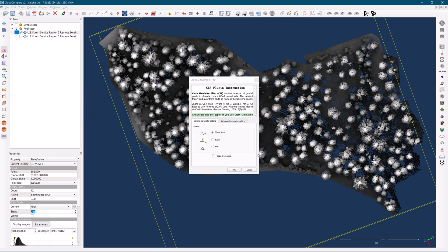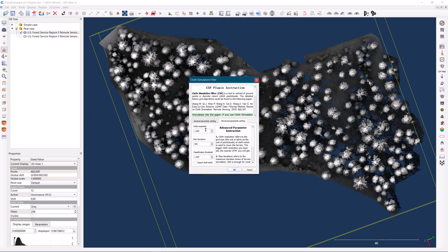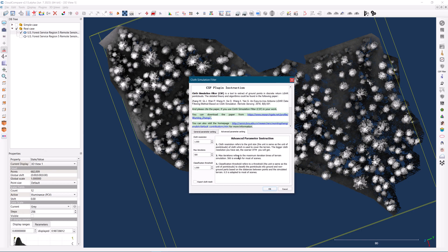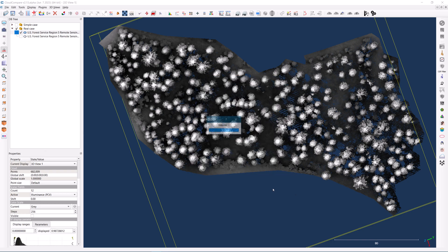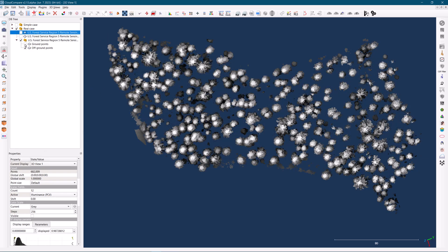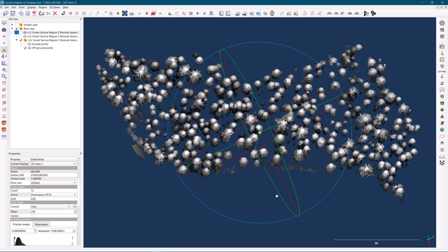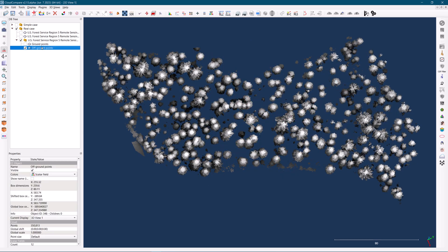Next, we will use the cloth simulation filter to extract the ground from the point cloud. It is recommended to increase the classification threshold to ensure that all ground and short vegetation are effectively eliminated. This step helps in focusing solely on the trees that we aim to isolate.